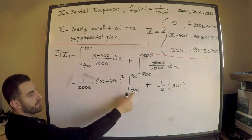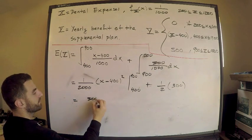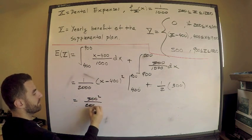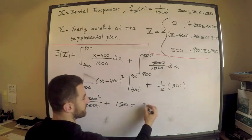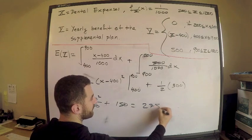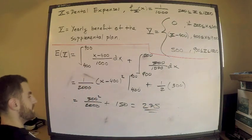And the nice thing about integrating it this way is when I plug in 400, I get 0. So this is equal to 500 squared over 2000 plus 150. And what you should get here, I believe, is 275. So there's the expected value. And yeah, you get 275.